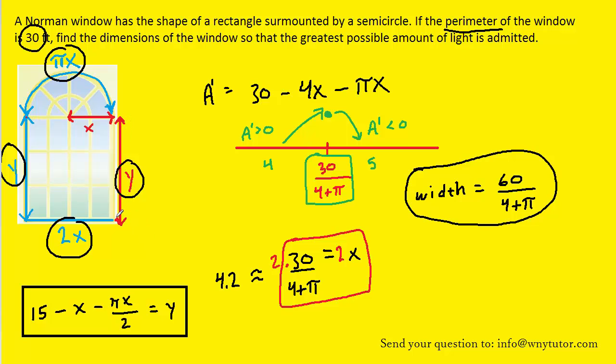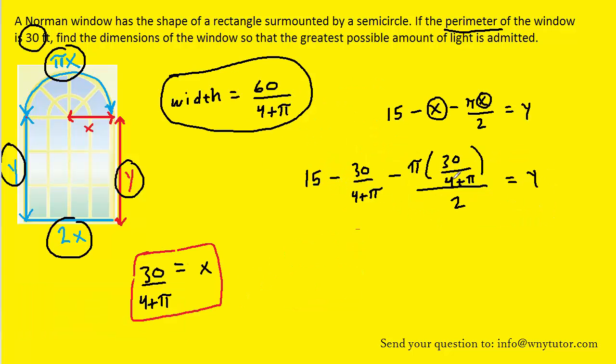Again, we still need to find the length of the rectangular part of the window, which is the y value. So all we're going to do is substitute our x into this equation for y. So that's our final step. So here's the y value. It's a little bit nasty, so maybe we can simplify it. And maybe one step in doing that is to take this 4 plus π and just push it down to the denominator here. That's a little bit of a fraction shortcut that we can take. And then we'll need to find a common denominator by multiplying this by 2 on the bottom and on the top.